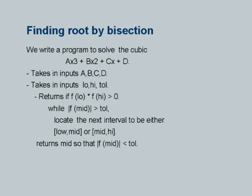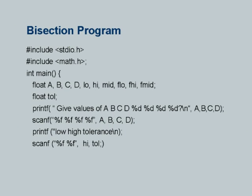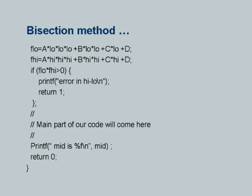That means f(mid) becomes less than tolerance. This f(mid) is taken as an absolute value because the function value around the root may be either just slightly positive or slightly negative. Later on when we describe binary search using this, we will not have to worry about this because we will be looking at discrete data and not a real number line.